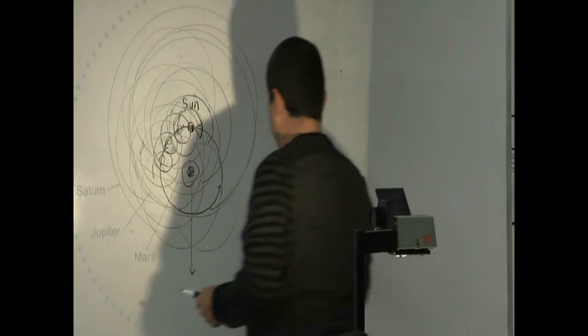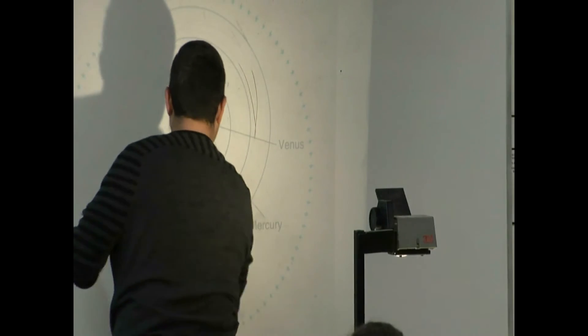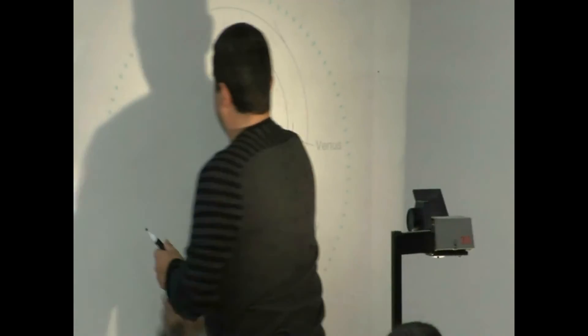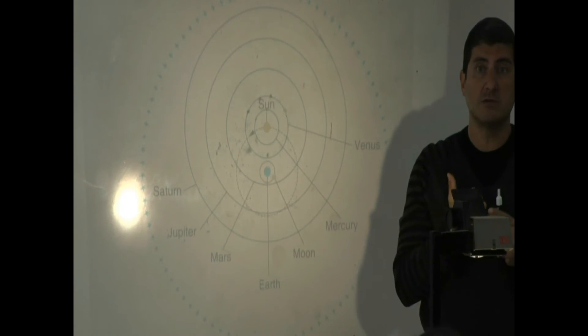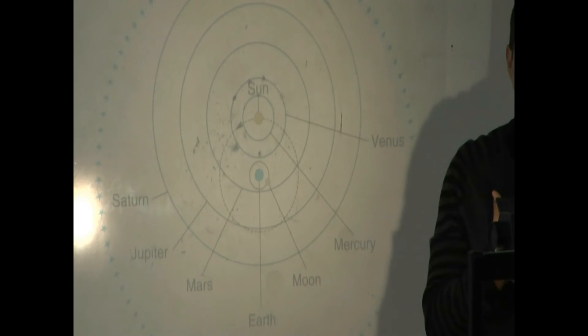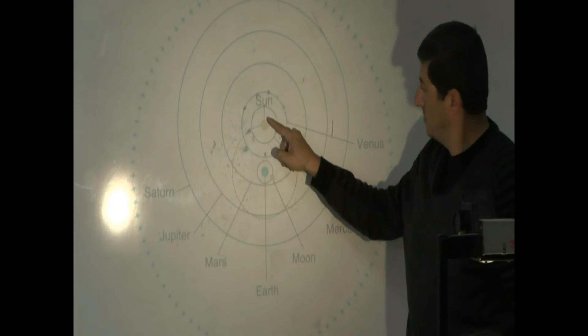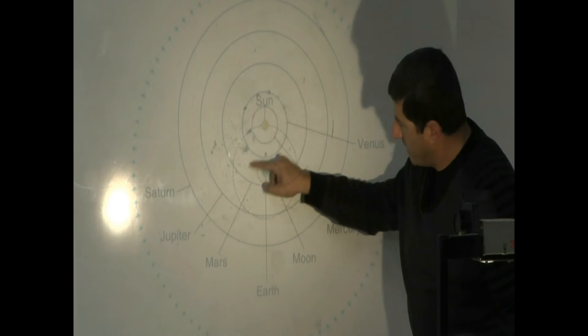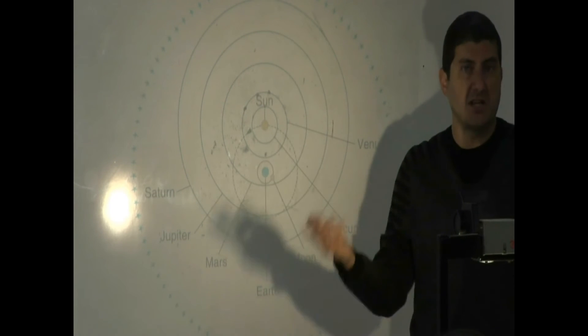Now the one interesting thing that you'll observe from this. Does his model account for retrograde motion while planets go back? Yeah. You see? It goes back. Back. Back. Is it correct? No. But at least it accounts for it.